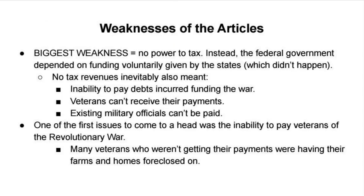The biggest weakness of the Articles was that there was no power to tax. With no power to tax, you could do hardly anything, because you need tax revenues to pay for almost anything the government needs to do — like paying off debts procured from foreign governments during the Revolutionary War. Veterans from the war couldn't receive their benefit payments, and existing military officials and soldiers couldn't be paid. So it's really one of the biggest reasons for dysfunction.